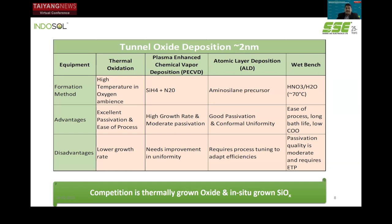There are several routes existing for tunnel oxide deposition for a thickness ranging between 1.5 to 2 nanometers. The most common methods used by manufacturers are thermal oxidation, plasma enhanced chemical vapor deposition (PECVD), atomic layer deposition (ALD), and wet benches. Of these, the two most important ones are thermal oxidation and PECVD, because of the inherent performance they offer for TopCon. Although wet benches are the most inexpensive method, the performance is not great, passivation quality is moderate, and they also require an effluent treatment plant. In most situations for the TopCon process, 70% of manufacturers use thermal oxidation as their primary method, followed by PECVD.